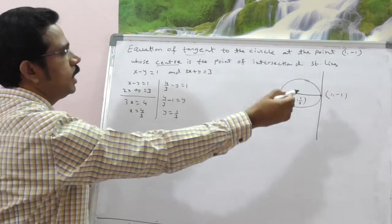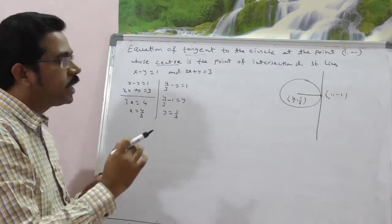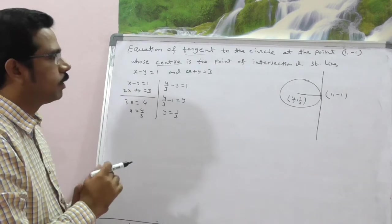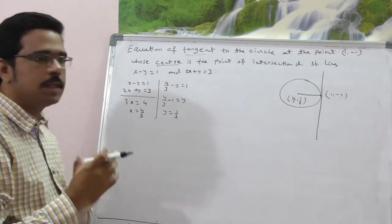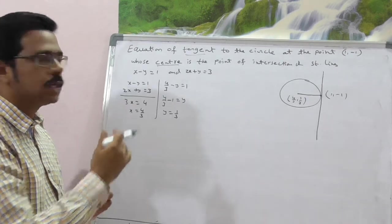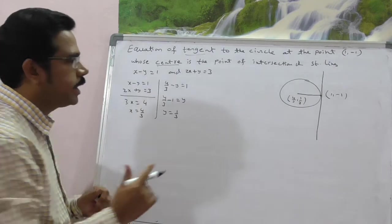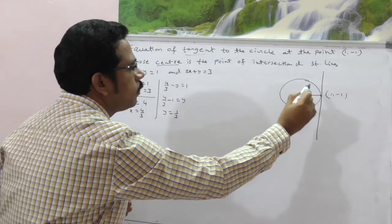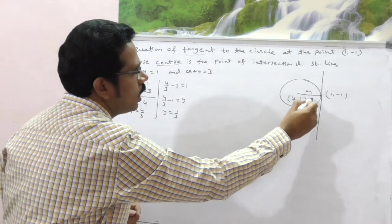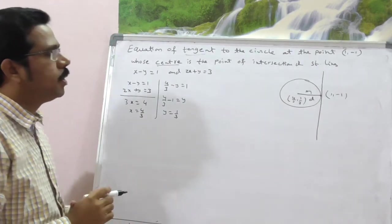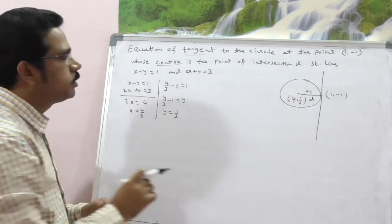The tangent to the circle at (1, -1). So, we have to calculate the equation of tangent, some options are given. What is the general concept or standard concept of tangency for circles? That is nothing but r is equal to d. What is r? r is nothing but radius of the circle. And what is d? d is nothing but perpendicular distance from center to that line.